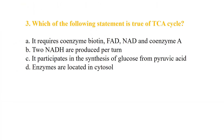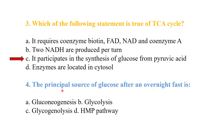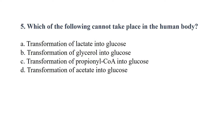The best answer is the synthesis of glucose from pyruvate; all other options are false. Question: the principal source of glucose after an overnight fast is gluconeogenesis. Which of the following cannot take place in the human body? The answer is: transformation of acetate to glucose does not take place in the human body.